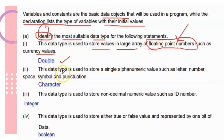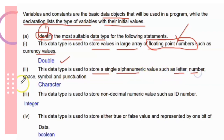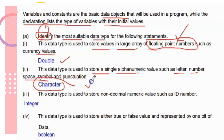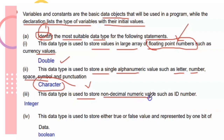First: this data type is used to store values in a large array of floating point numbers, such as R and C values. The keyword here is 'floating point', so the answer is double. Second: this data type is used to store a single alphanumeric character — such as a letter, number, space, or symbol. Third: this data type is used to store non-decimal numeric values such as whole numbers — the answer is integer.